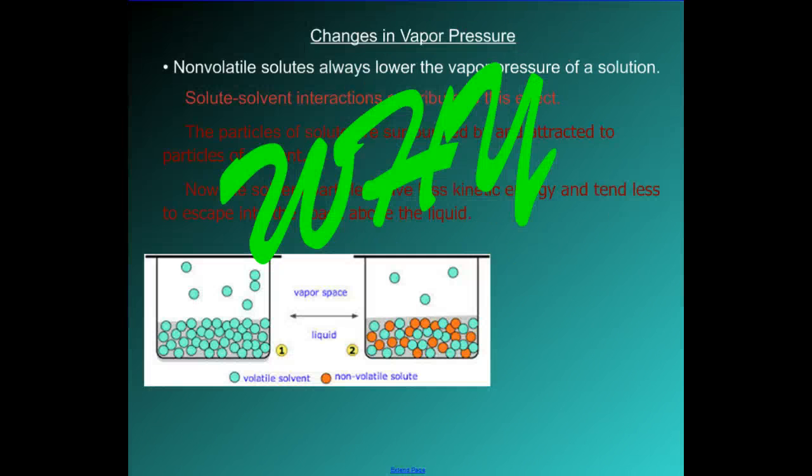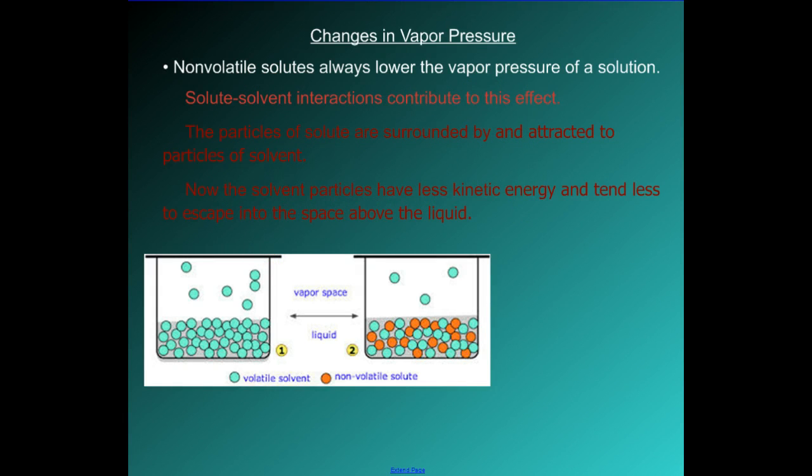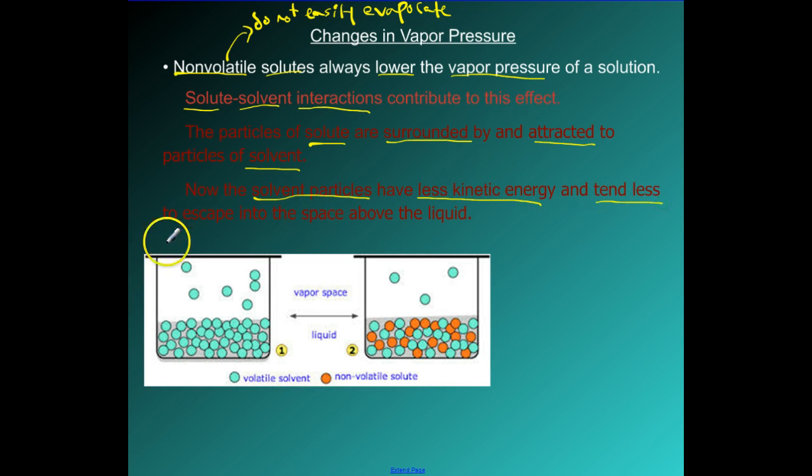Why is this that we have changes in our vapor pressure? Let's go ahead and look at the changes. We have non-volatile solutes, which again means they do not easily evaporate. So they always lower the vapor pressure of the solution. The solute-solvent interactions are what contribute to this. The particles of the solute are surrounded by and attracted to the particles of the solvent. Now the solvent particles have less kinetic energy and tend less to escape into the space above the liquid.